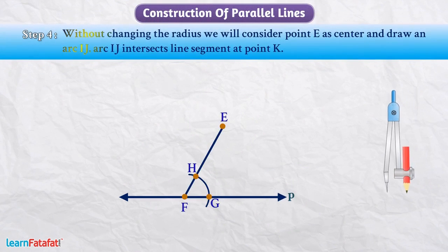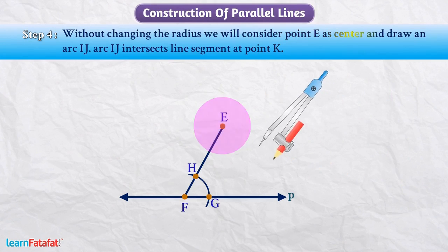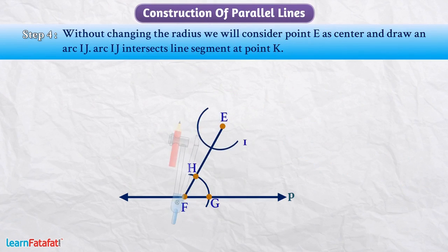Without changing the radius, we will consider point E as center and draw an arc IJ. Arc IJ intersects line segment at point K.